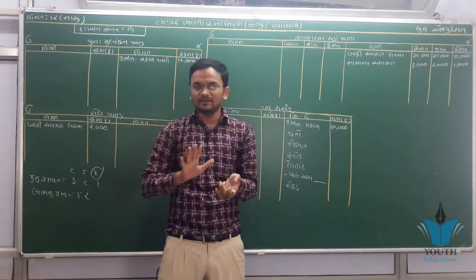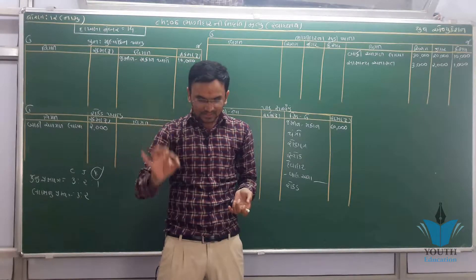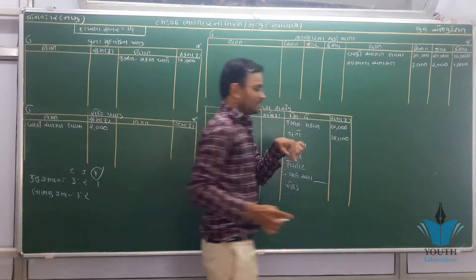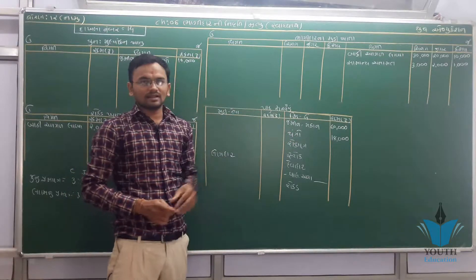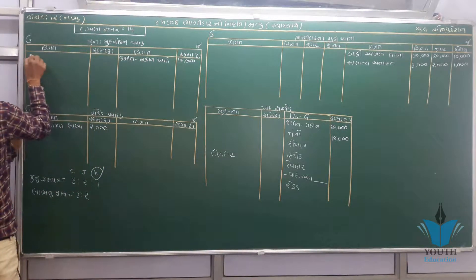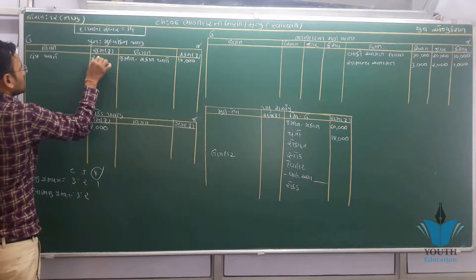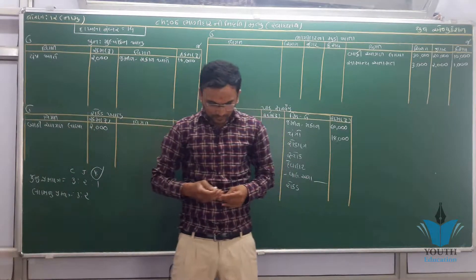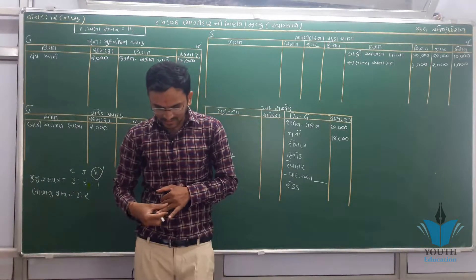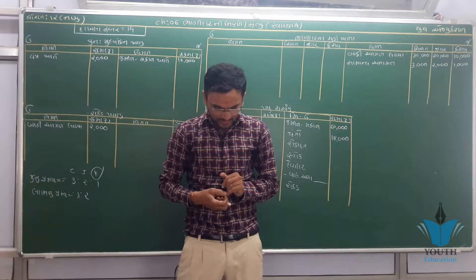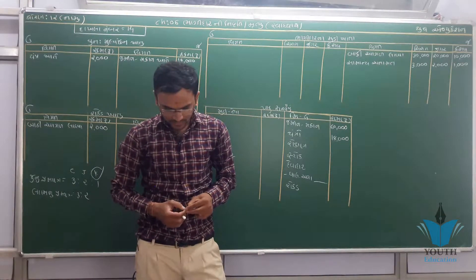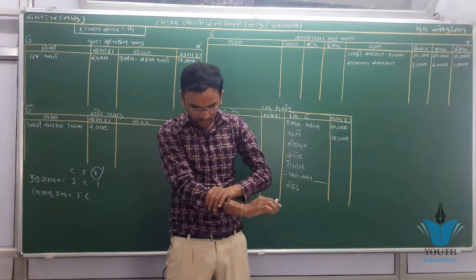યંત્રની કિંમત 90 ટકા સુધી રાખવી. પહેલા જોઈ લઈએ: યંત્રની કિંમત 20,000. ત્યાર બાદ, રોકાણની બજાર કિંમત ચોપડા કિંમતના 150% જેટલી છે. 10,000 × 150% .